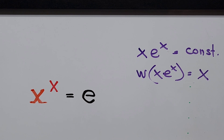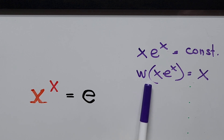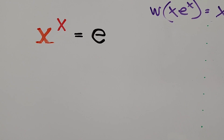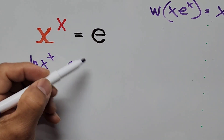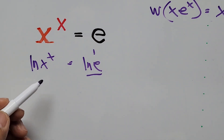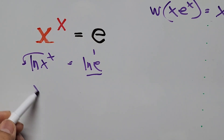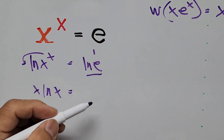So going back to our equation, how can we transform x to the power of x into the form x times e to the power of x, so we can utilize the Lambert W function? First, we take the natural logarithm on both sides: ln of x to the power of x equals ln of e, and ln of e equals 1. Moving the exponent x as a coefficient to the front, we get x times ln of x equals 1.